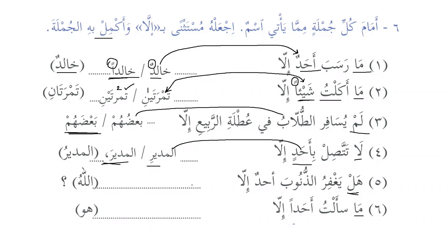For 'la ilaha illa allah,' there are two possibilities: 'illa allahu' (marfoob) or 'illa allaha' (mansoob). The grammarians say marfoob is afsahu — more preferable. That's why in the kalima we have 'la ilaha illa allahu.' However, 'la ilaha illa allaha' is also grammatically correct.